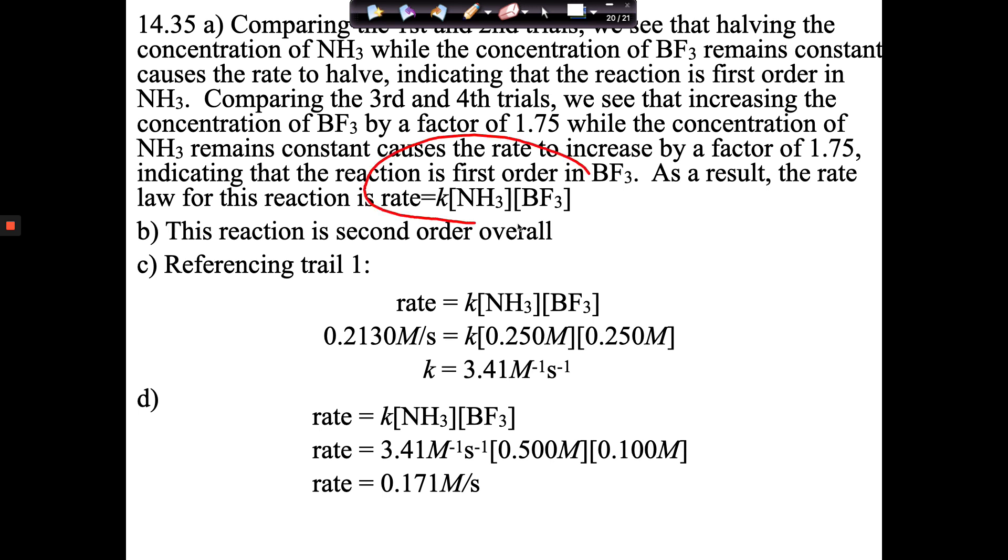So this is the rate law for the reaction. Okay. And we understand the exponents are the reaction orders, first order, second order, third order. So this is first order in NH3. This is first order in BF3. The ones are understood to be there. And so to get the overall reaction order, you just add them up. So one plus one is two.